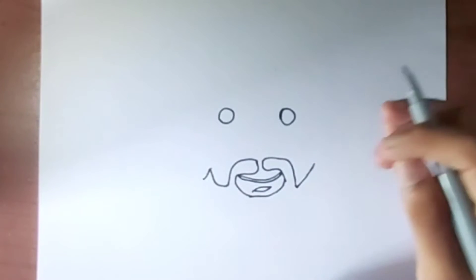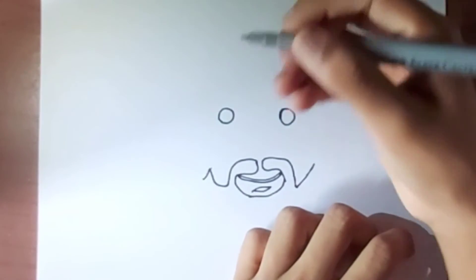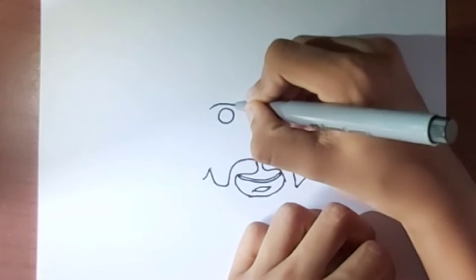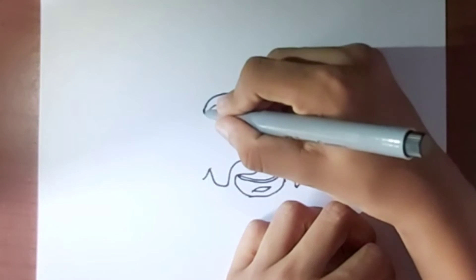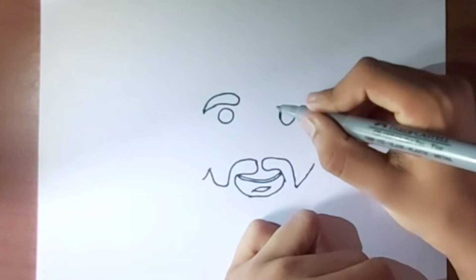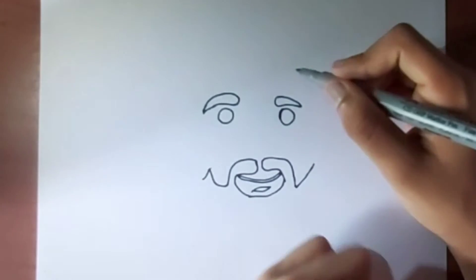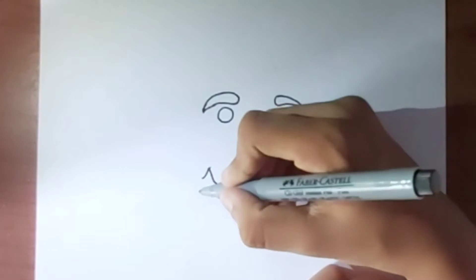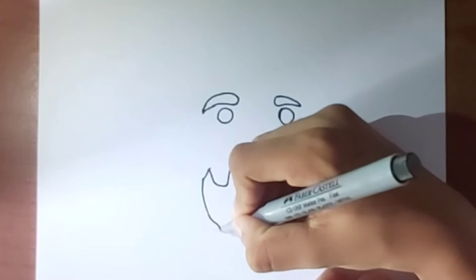And right like that. Now to draw the eyebrows, we go from here just a little up from the eyes and the same on the other side. Now from here we go all this.